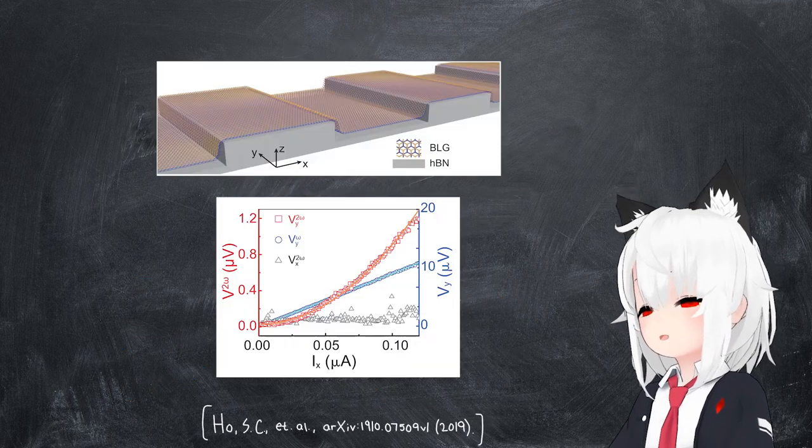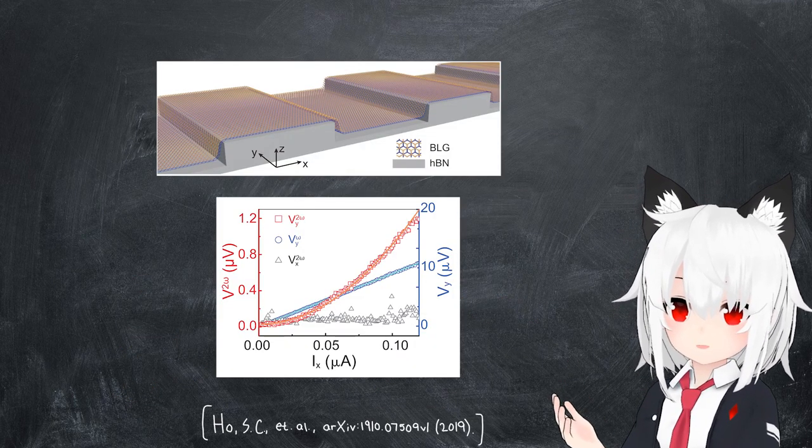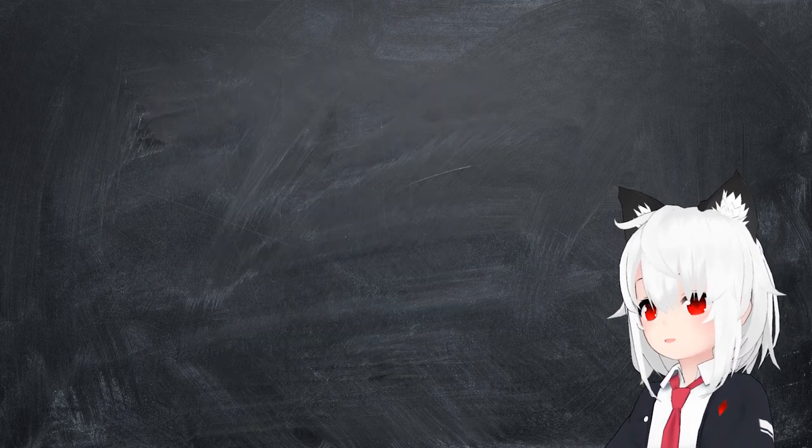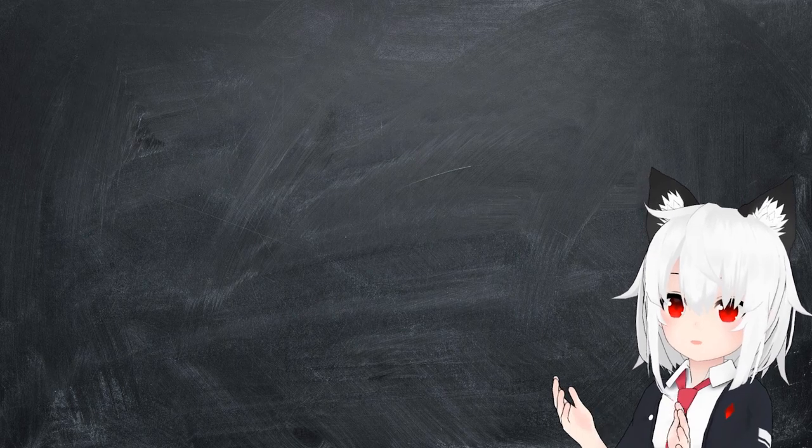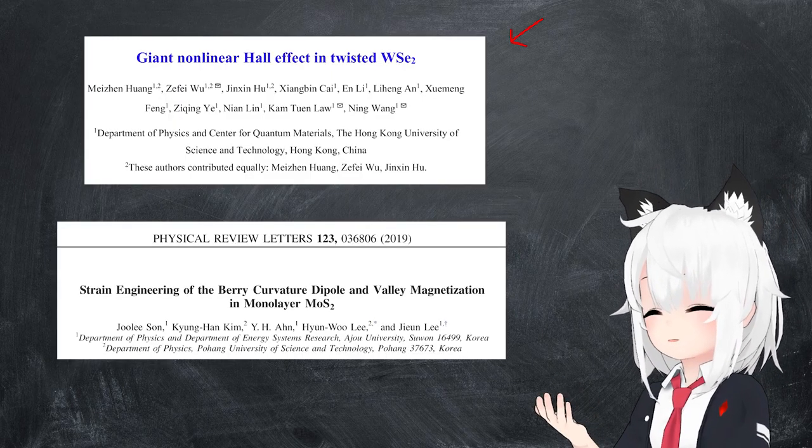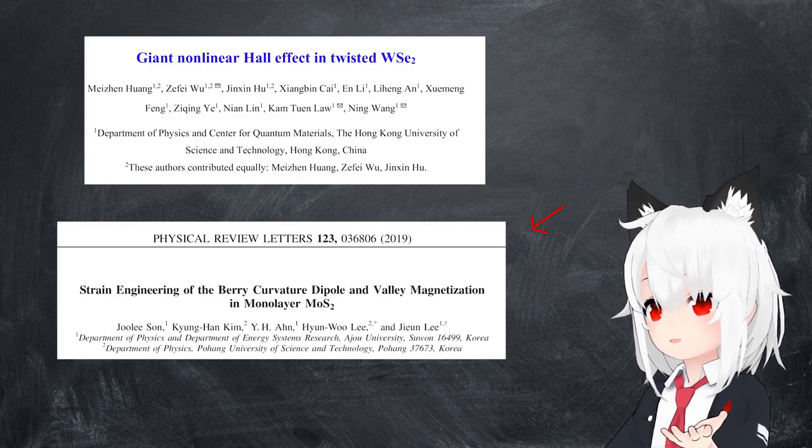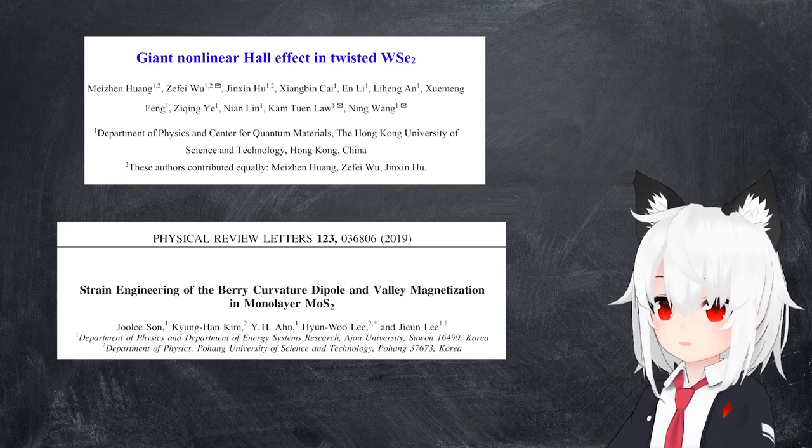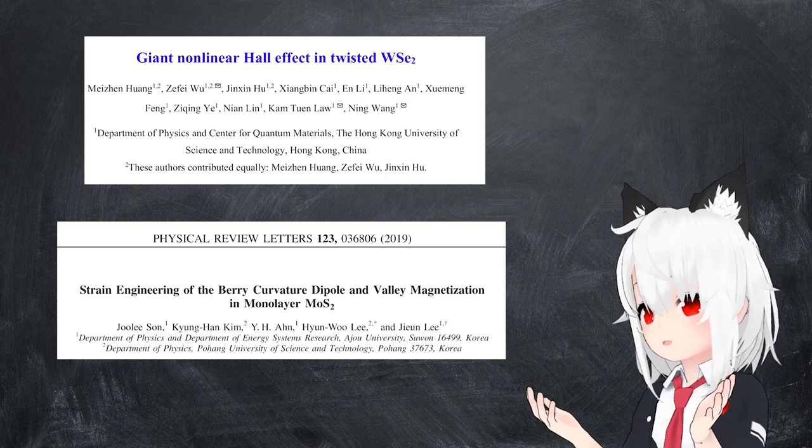And what do you know? This is exactly what was observed in a strained bilayer graphene system probed in its non-equilibrium state. In fact, this effect has been observed in a whole bunch of materials ranging from tungsten diselenide to molybdenum disulfide, ultimately providing pretty good evidence that these Berry curvature effects are, well, real.